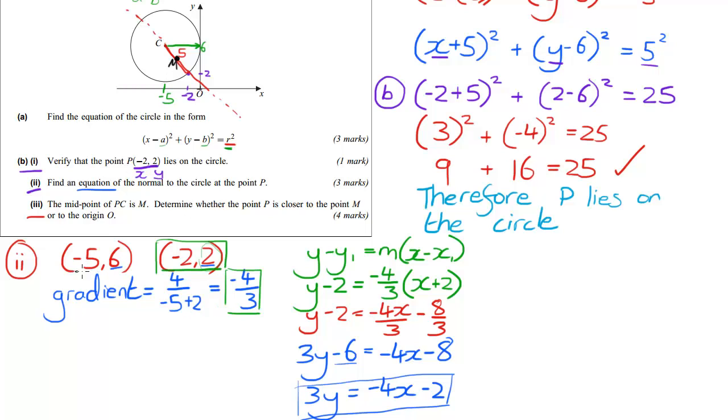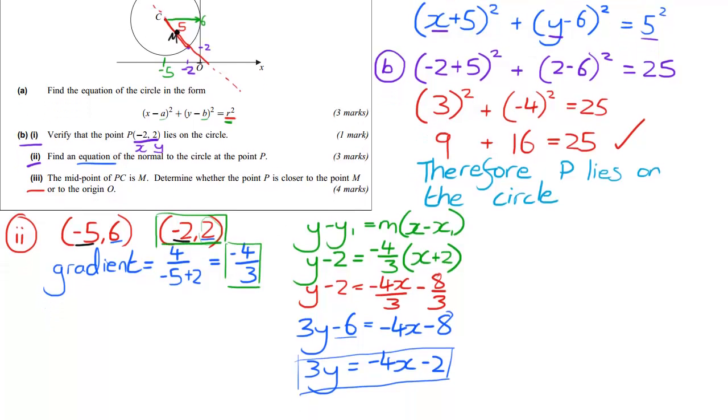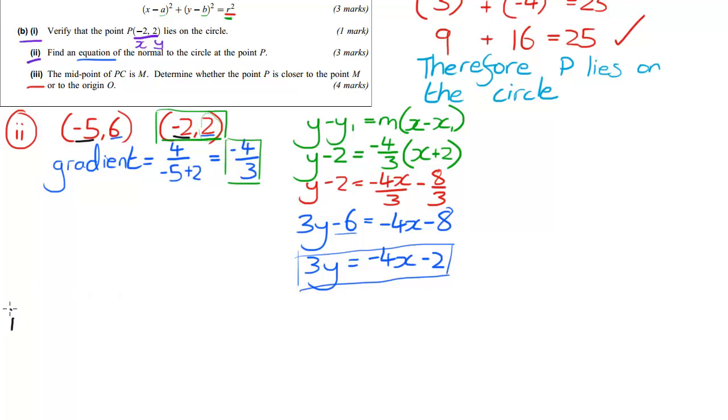The midpoint of M: let's take the middle of minus 5 and minus 2. Minus 5 plus minus 2 over 2 is going to equal minus 7 over 2, so minus 3.5. That's our x-coordinate. And then 6 and 2, the middle of those is 6 plus 2 over 2, which is 4. So that's our y-coordinate. Our M midpoint is going to be minus 3.5, 4.